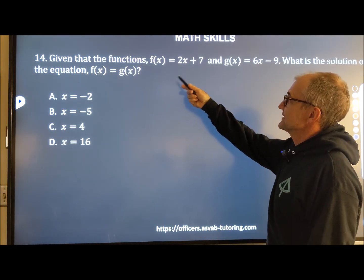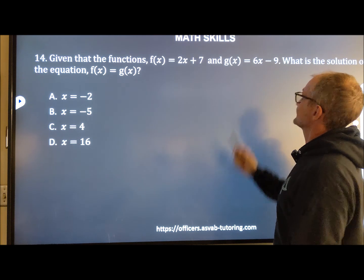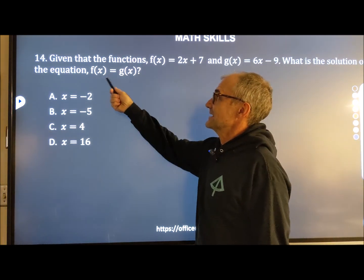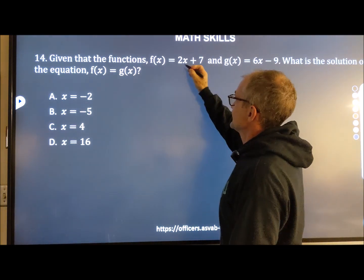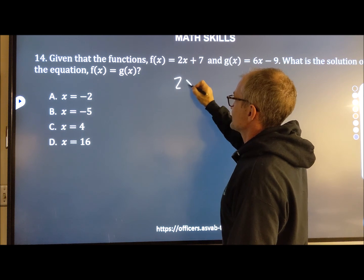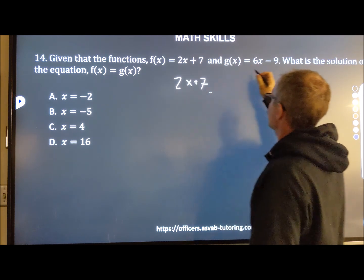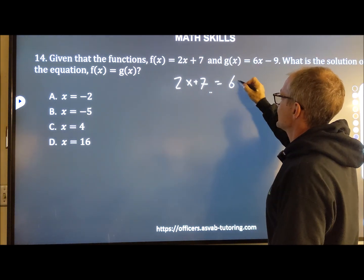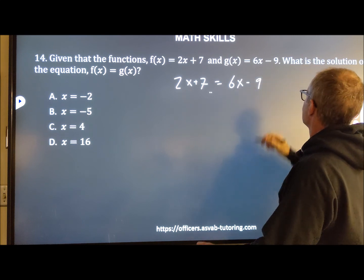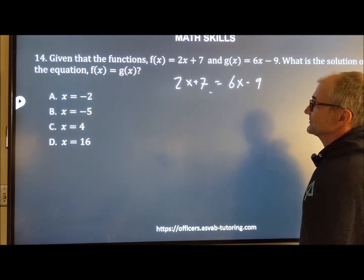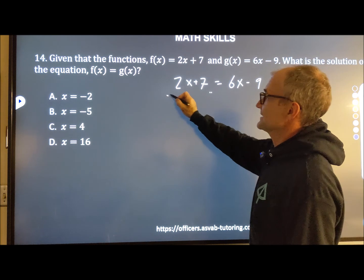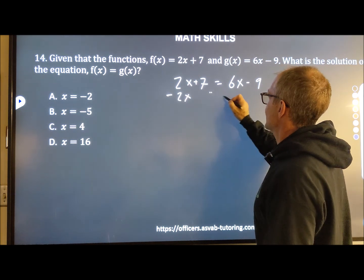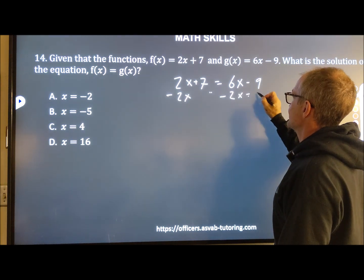Number 14, given the functions f(x) equals that, d(x) equals that. It's just saying set that equation equal to that equation. So that equation is 2x plus 7. That equation is 6x minus 9. And now all I need to do is solve for x. I can get all the x's on one side. I'm going to subtract 2x from both sides. I'm going to add 9 to both sides.